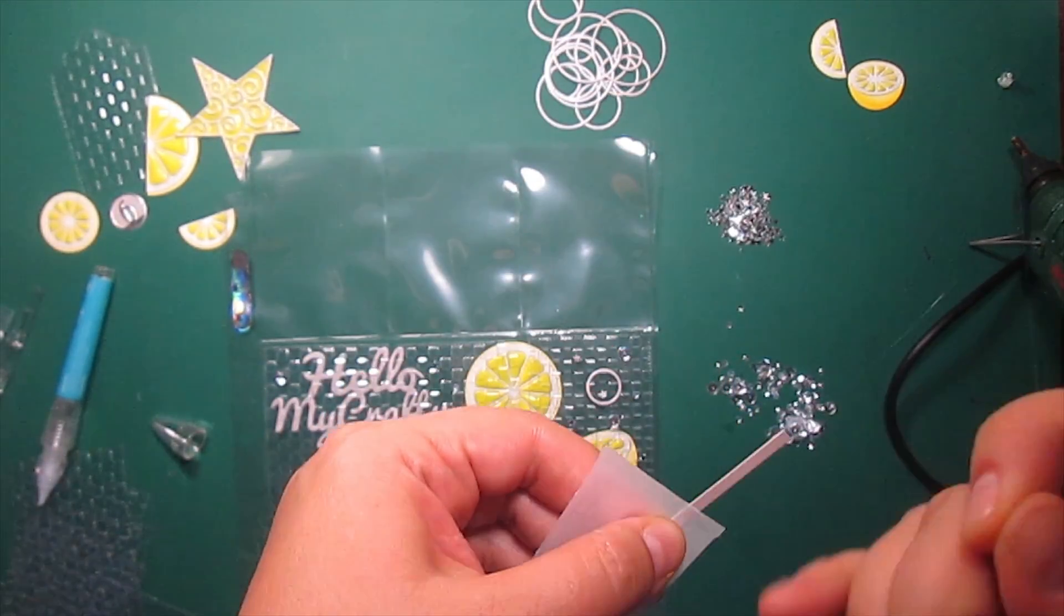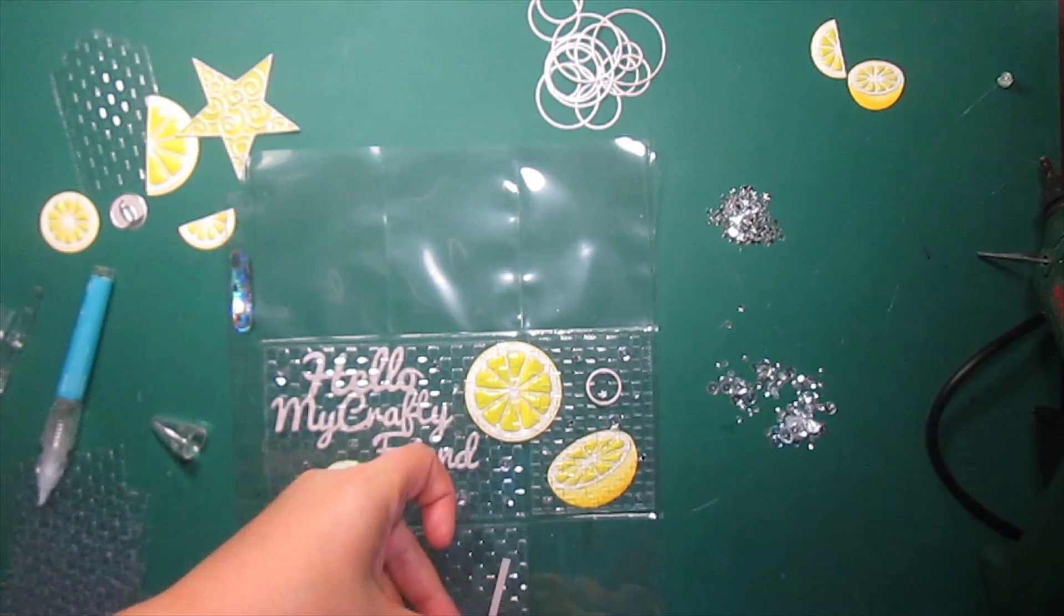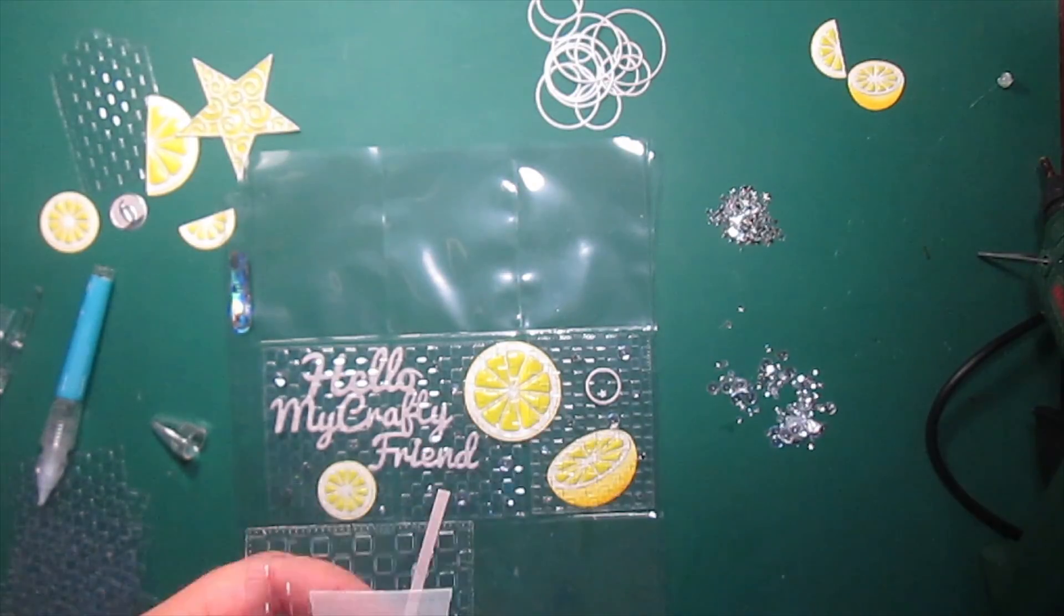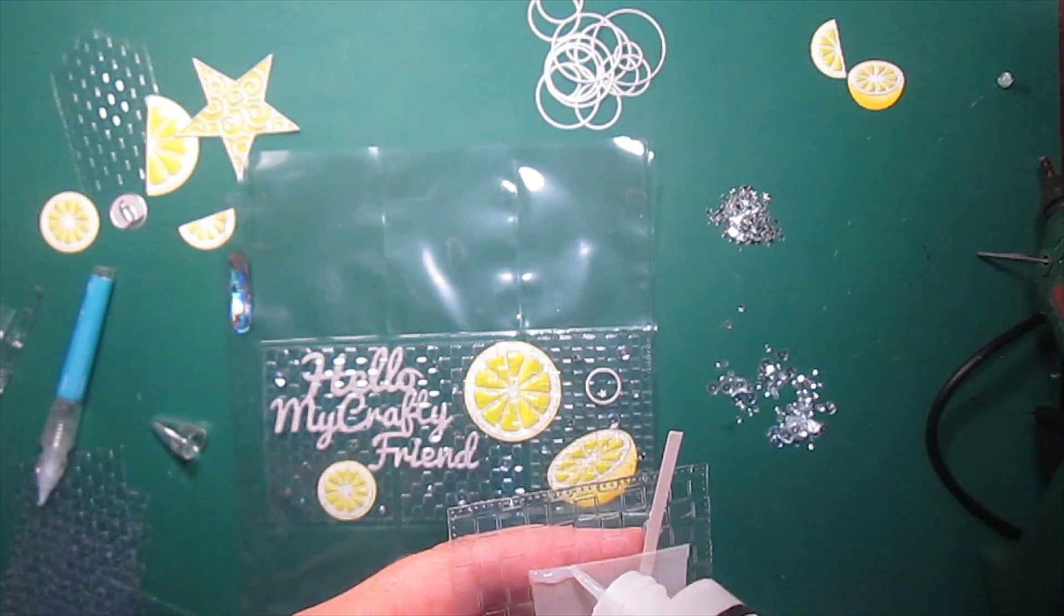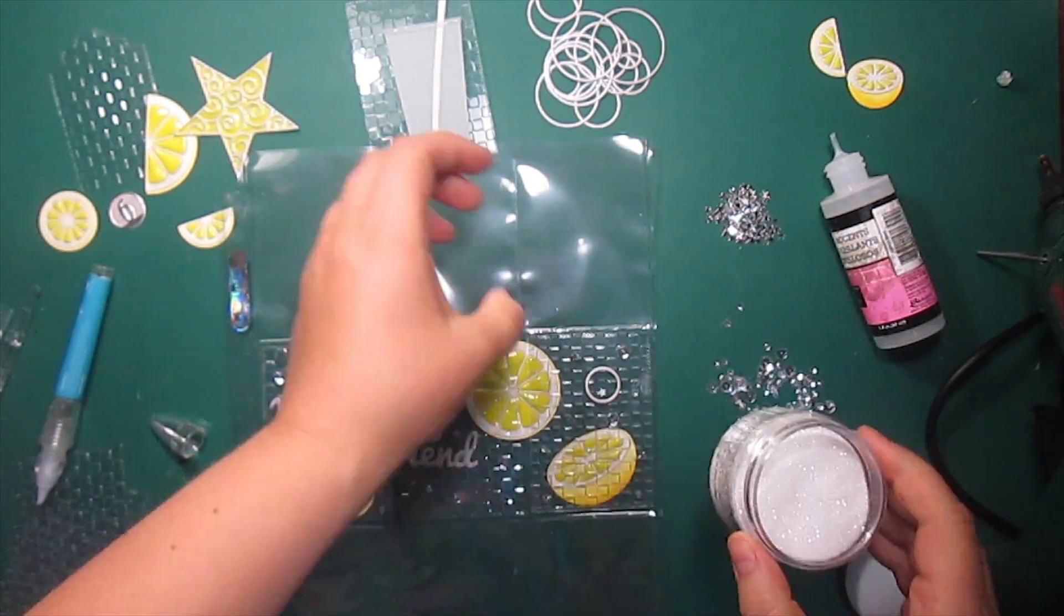I've die cut the glass out of vellum and I'm attaching it to one of the panels with the hot glue. To make sugar icing I'll use glossy accents and rock candy distress glitter.